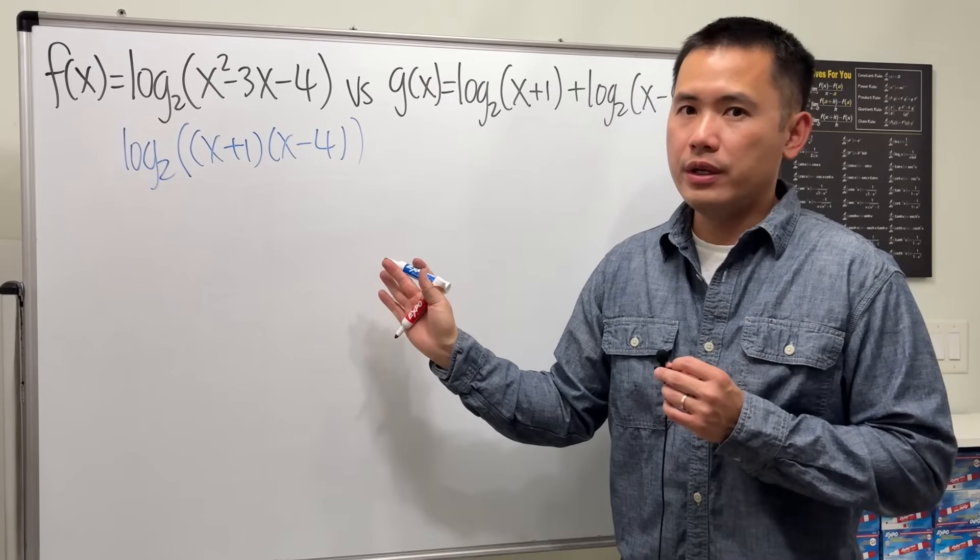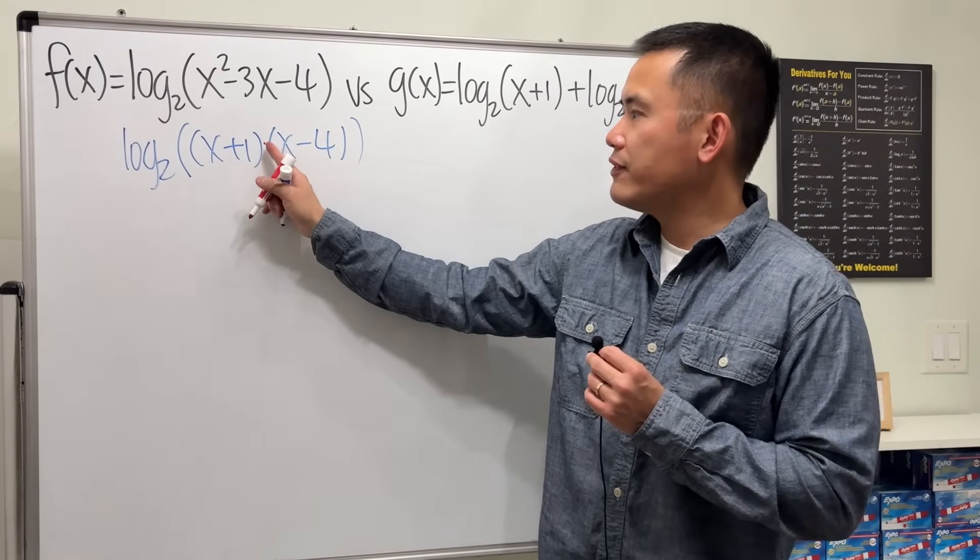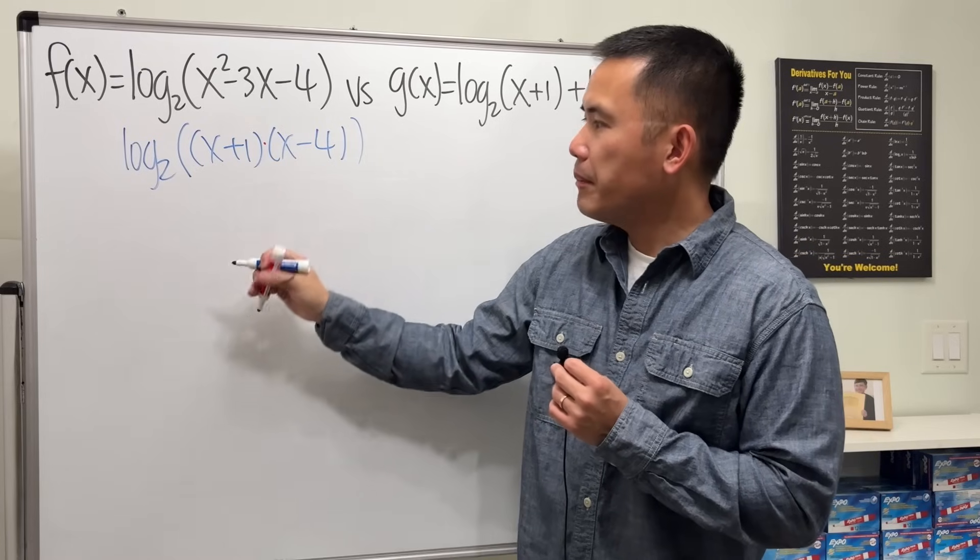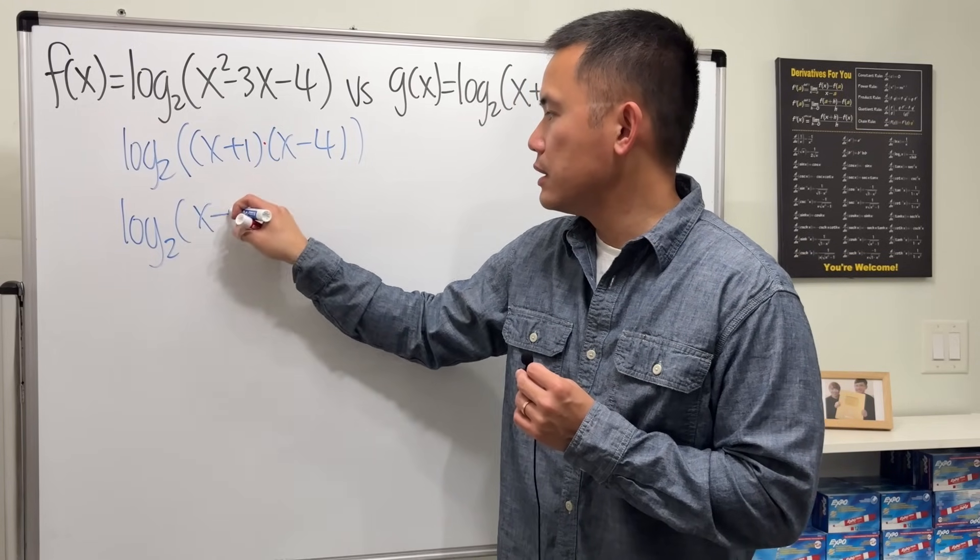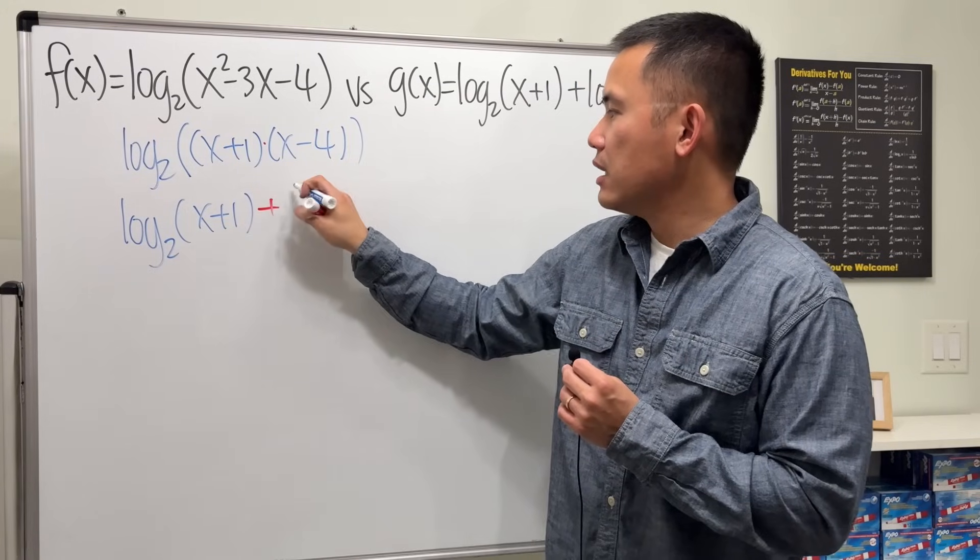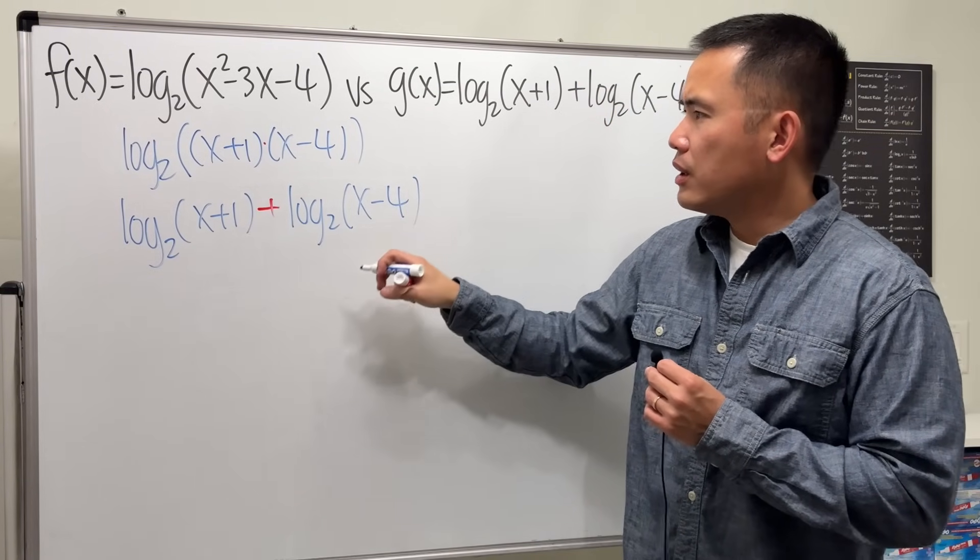So far I agree. Then we have the law property, right? We have a multiplication inside, that means we can just break it apart as log base 2 of the first plus log base 2 of the second.